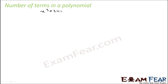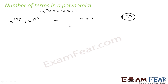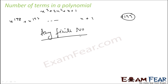We have seen polynomials of various types. Can I have 1000 terms? Can I have a polynomial something like x to the 198 plus x to the 197, dot dot dot, x plus 1? This will have 199 terms. Yes, I can — actually a polynomial can have any finite number. Please note: any finite number. It will not have infinite terms, but any finite number.